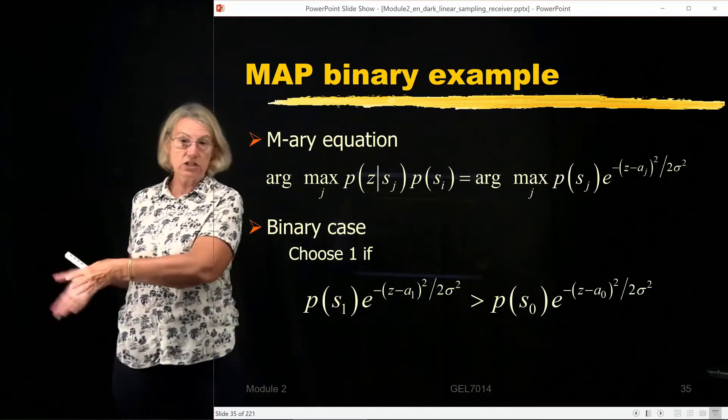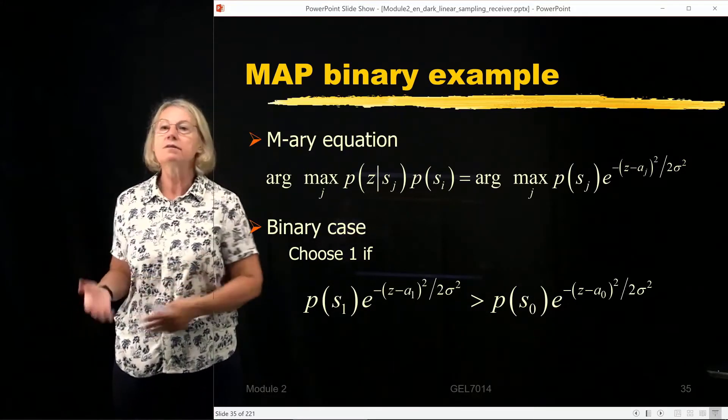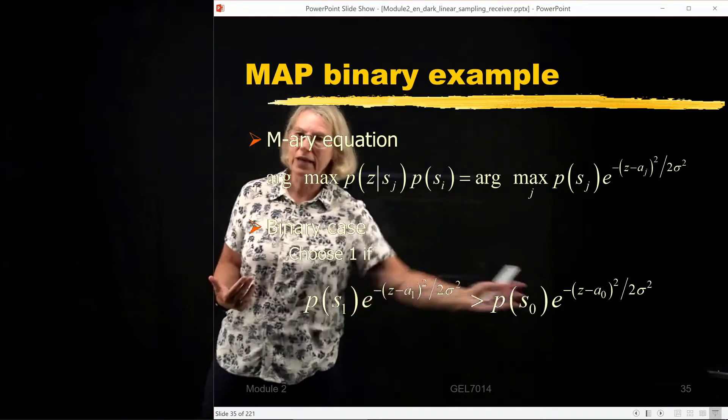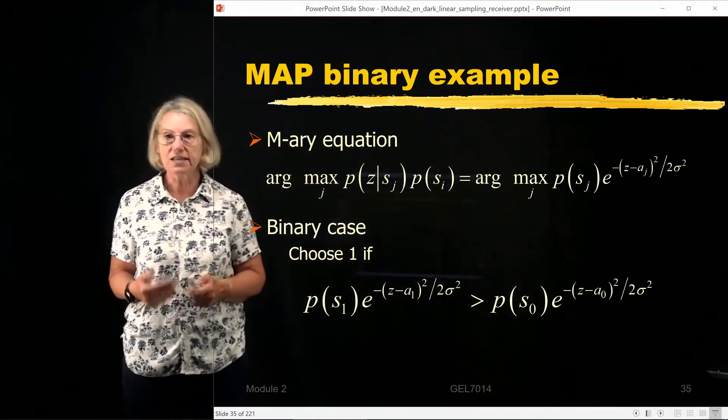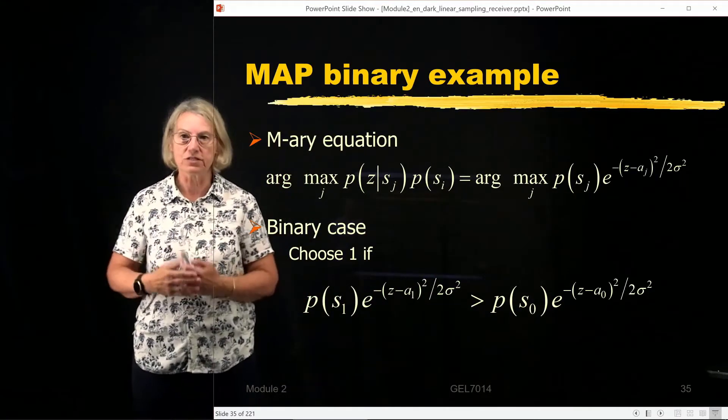So essentially looks like what we saw in the maximum likelihood, but now each term has a weighting associated, and that's the a priori, the additional information that's available to us.